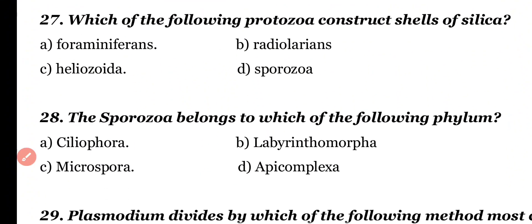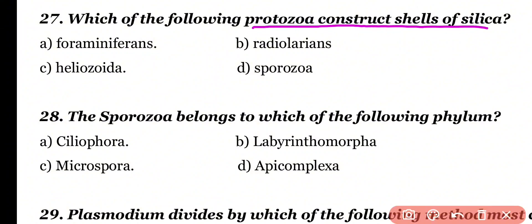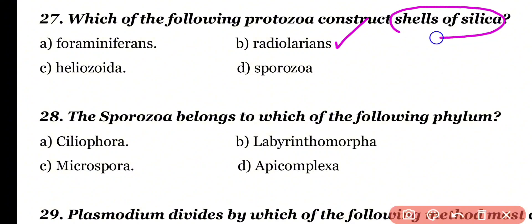Question number 27: Which of the following protozoa construct shells of silica? Foraminifera, Radiolarians, Heliozoida, or Sporozoa? Correct answer is option B. Radiolarians have shells of silica.